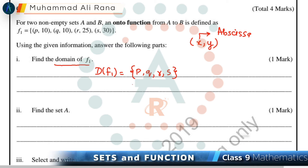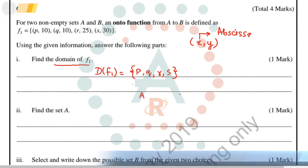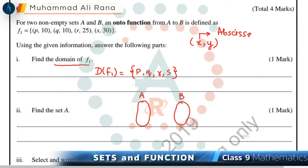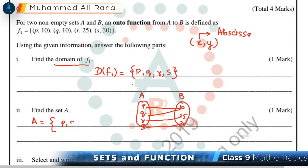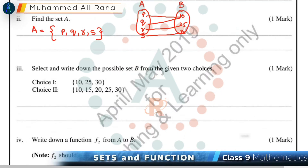Now for Part 2, we have to find Set A. Since this onto function goes from Set A to Set B, let's do the mapping: p maps to 10, q maps to 10, r maps to 25, and s maps to 30. So Set A is equal to {p, q, r, s}.